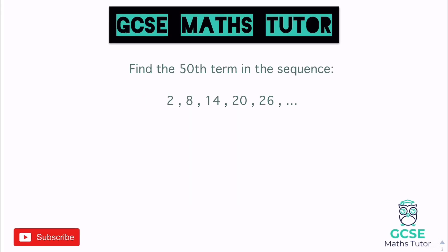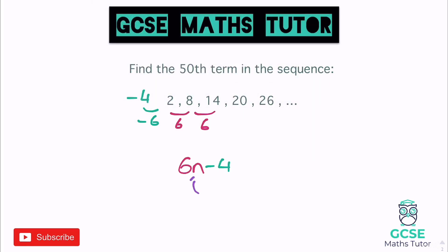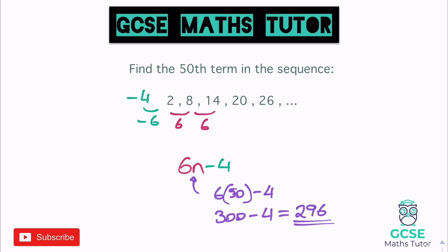Now find the 50th term in the next sequence. It goes up in sixes, so that's 6n. Applying the trick, we go back six: minus six gives us minus four. So the nth term is 6n minus 4. We substitute 50 in place of n: six lots of 50 take away four. Six times 50 is 300, and 300 minus 4 gives us 296 as our 50th term.